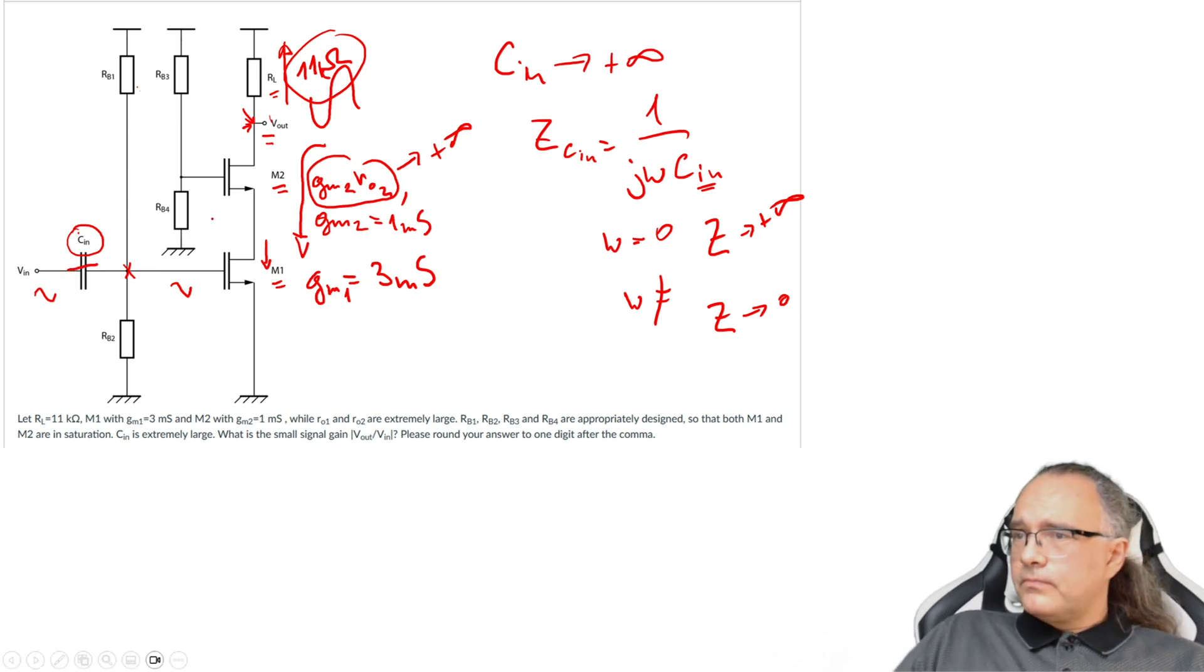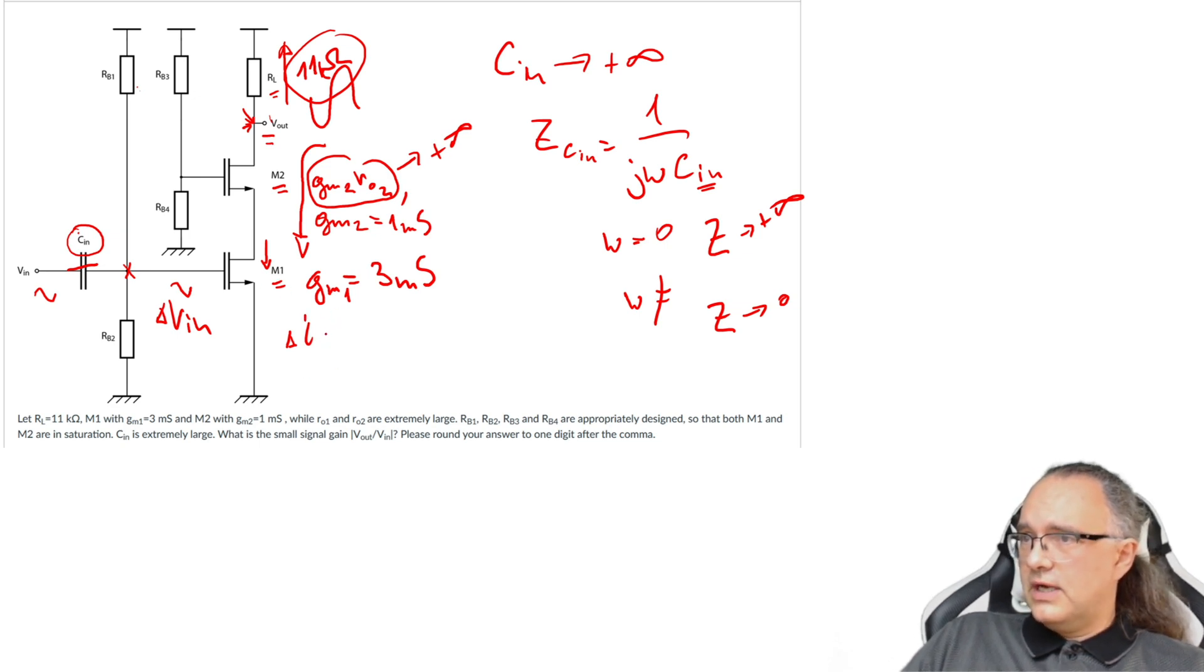So this is standard biasing. The question is, what is the small signal gain Vout/Vin? So then, as I said, we have ΔVin, the signal here. And then it is transformed by the transistor M1, its GM. It is transformed to ΔI equal to GM1·ΔVin. And then it is transformed into voltage in this node by the resistance level. The resistance level at this node is a very large resistance here in parallel with R load. So the dominant will be R load.